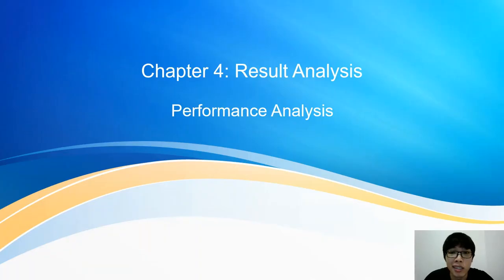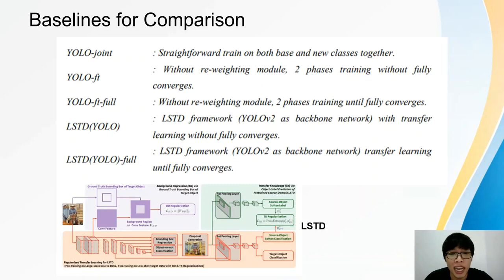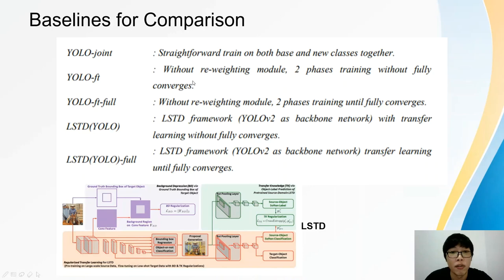Chapter 4 will cover the performance analysis from the enhancements. Before that, several baselines are compared with the results in this project. YOLO-Joint is a YOLO-V2 detector that trains on both base and new classes together under 1, 2, 3, 5, or 10-shot learning. YOLO-FT is a YOLO-V2 detector with two-phase training but without reweighting modules and also without full convergence. YOLO-FT* is a YOLO-V2 detector with two-phase training and full convergence but without reweighting modules.